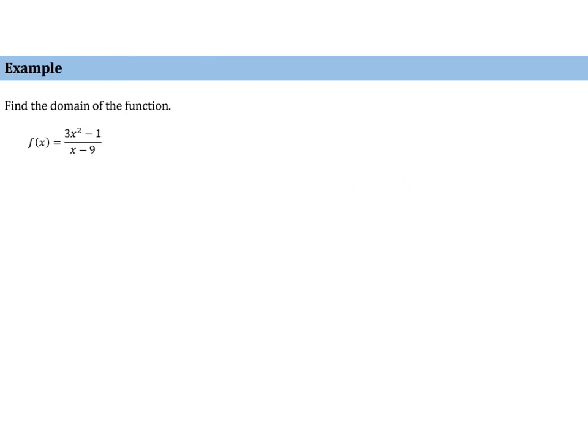So let's take a look at an example. We're going to find the domain of this rational function. We'll set the denominator equal to zero. So x minus 9, set equal to zero, will yield x equals 9. And this is a value we want to exclude.